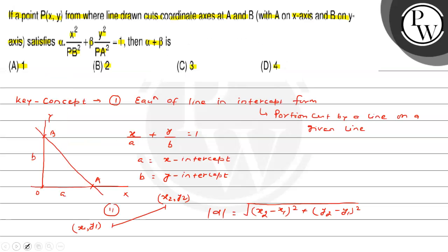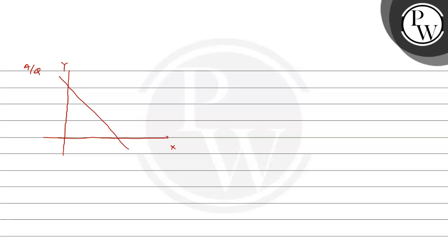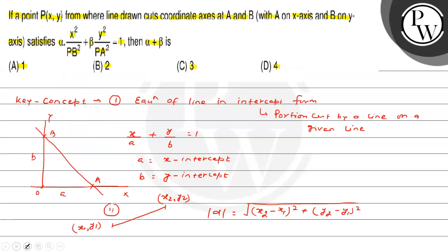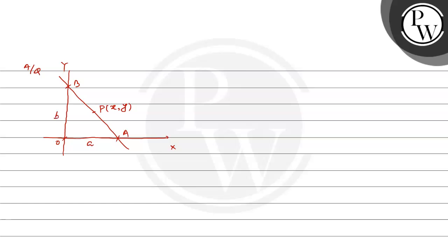According to the question, the line passes through point P(x,y) and cuts the x-axis at point A and y-axis at point B. We can understand that the intercept on x-axis is 'a' and on y-axis is 'b'. Then equation of AB will be x/a + y/b = 1, where OA = a and OB = b.